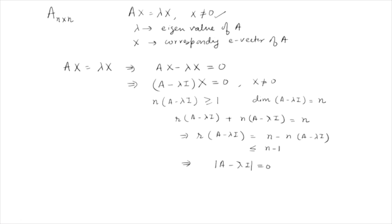The equation det(A − λI) = 0 is called the characteristic polynomial. This gives a characteristic polynomial in λ. Since A is a matrix of order n×n, this determinant will give a polynomial of degree n in λ.